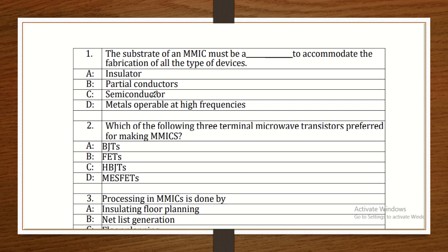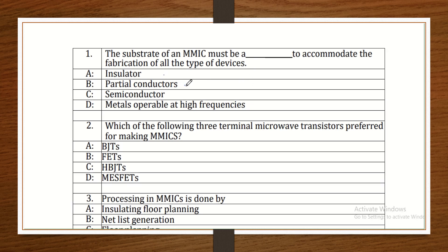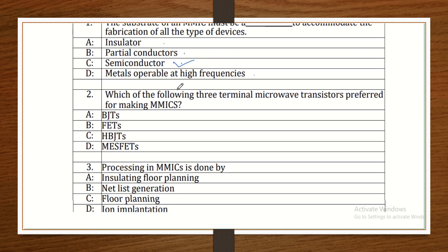The substrate of an MMIC — that is monolithic MIC — must be what, to accommodate the fabrication of all types of devices? The options are insulator, partial conductor, semiconductor, or metal at high frequency. Since this is an IC, obviously it should be a semiconductor. Substrate is always semiconductor-based for MICs.